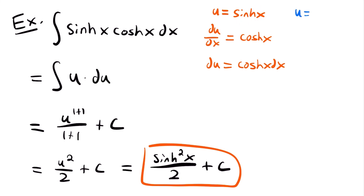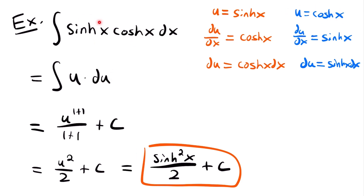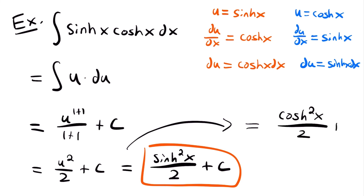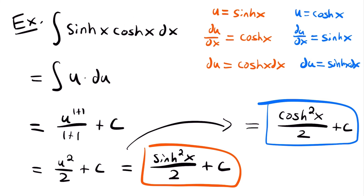What if we set u equal to hyperbolic cosine of x instead? Then du/dx equals hyperbolic sine of x, and du equals hyperbolic sine of x dx. We would get the same integral of u times du — but u is now replacing hyperbolic cosine. The result is hyperbolic cosine squared x divided by 2 plus c. Both answers are correct antiderivatives because both have the derivative of hyperbolic sine times hyperbolic cosine. Either solution is acceptable.